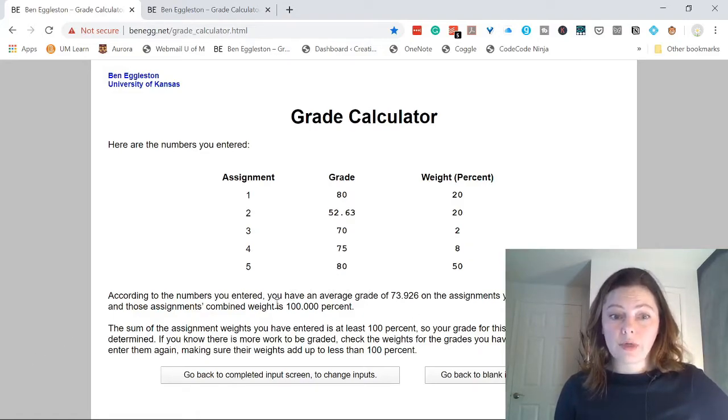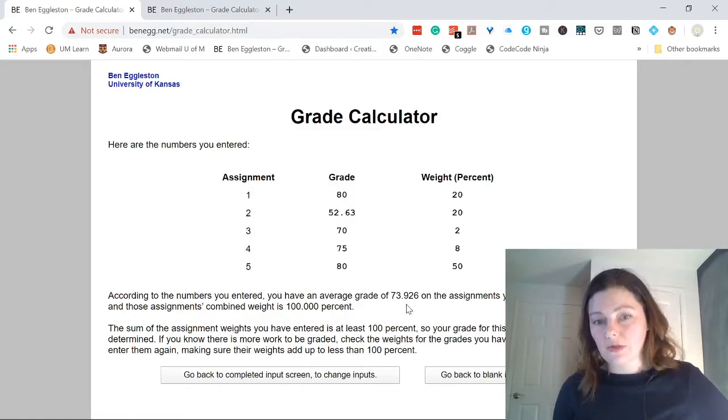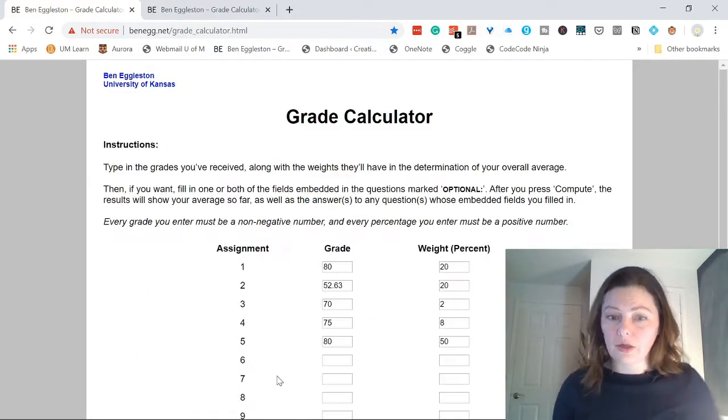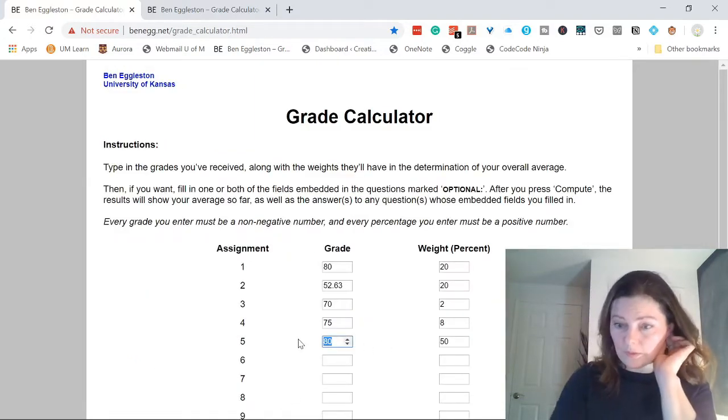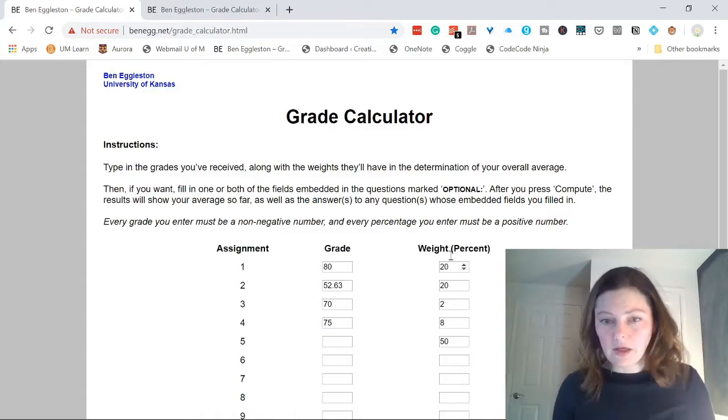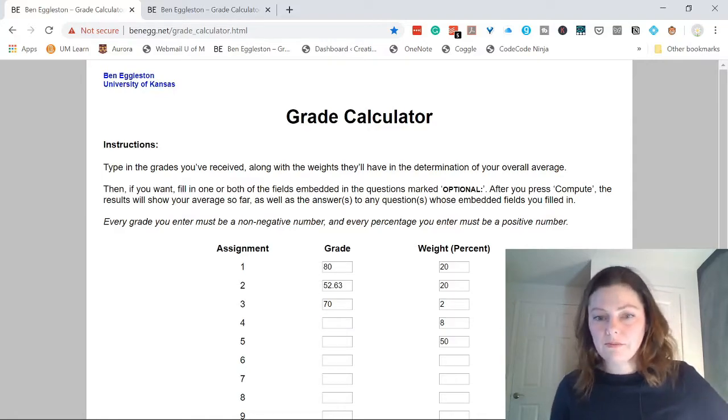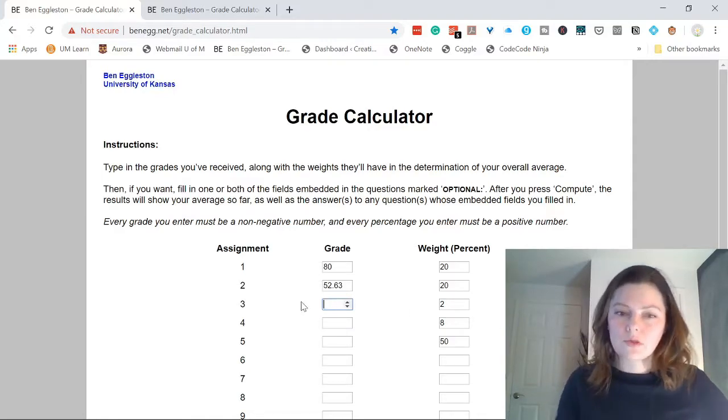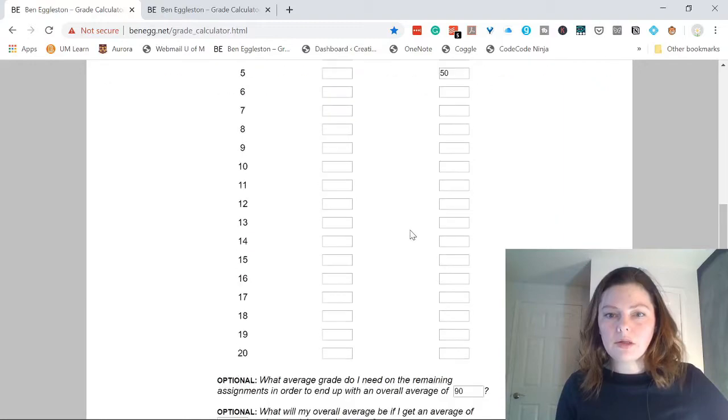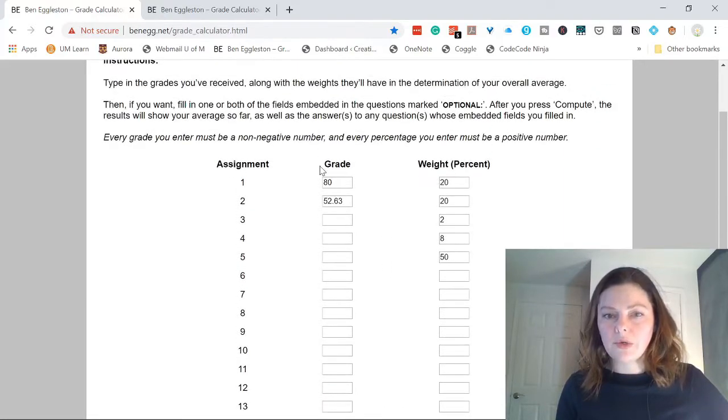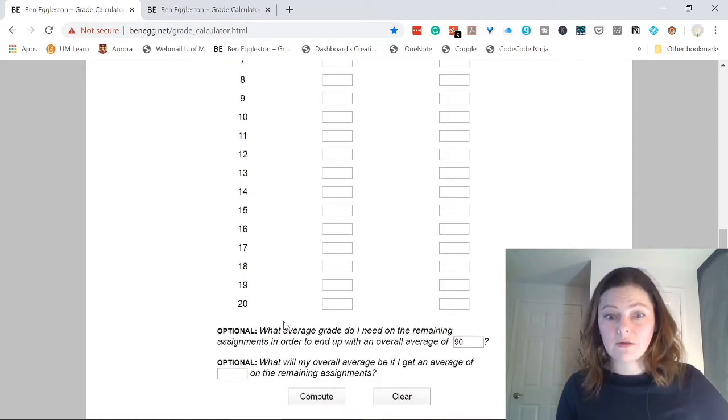And those combined assignments are 100%. So basically, it tells me there is no way for me to get 100%, right? But if I would have deleted this one, I keep the wait, but I delete the grade, because I don't know it yet. Let me delete this one too, I don't know it either. And this one, just to be exact. I'm curious if this is still possible for me to get 90%.